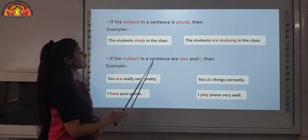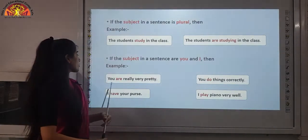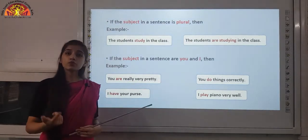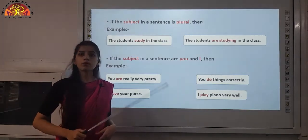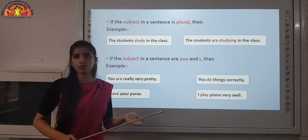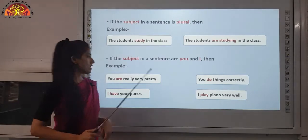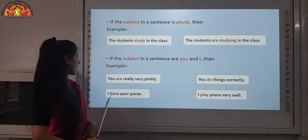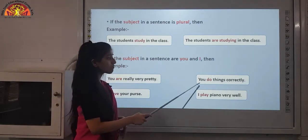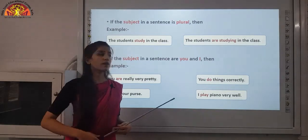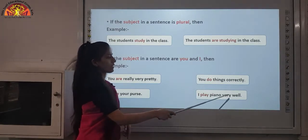If the subjects in a sentence are you and I, and we are using the BE form or HAVE form of the verb, it should be plural — are and have. So: you are really very pretty and I have your purse. But if you or I is directly followed by the main verb, then the verb is singular — for example: I play piano very well.